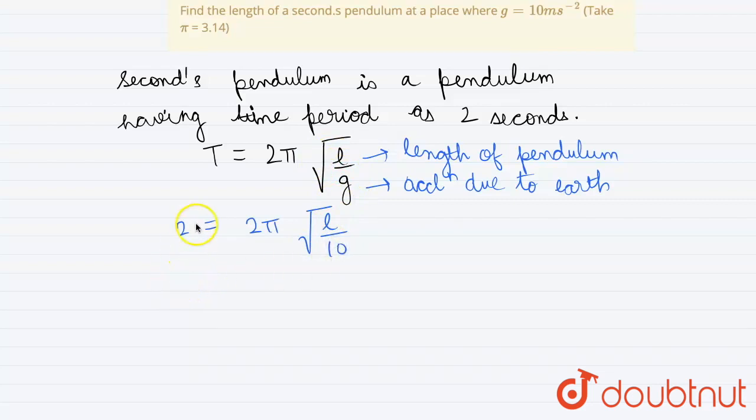Squaring both sides, we get 4 equals to 4π square times l by 10.